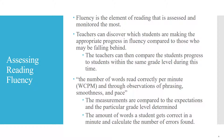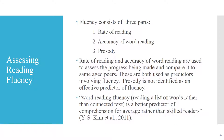Reading fluency is the element of reading that is assessed and monitored the most. Assessment of reading fluency is according to the number of words read correctly per minute, calculated by the number of errors found. When assessing reading fluency, it is important to consider the three parts: the rate of reading, the accuracy of word reading, and the prosody or expression of a student's reading. The rate and accuracy of word reading are often predictors of effective fluency. Prosody is not necessarily an effective predictor of fluency; however, it is still important for students to demonstrate those skills.